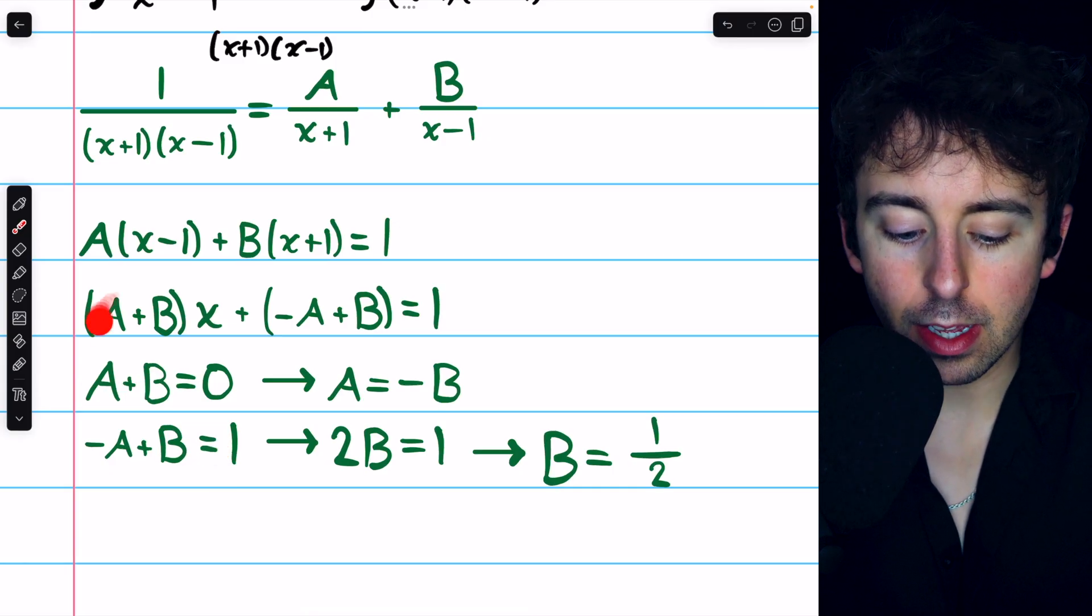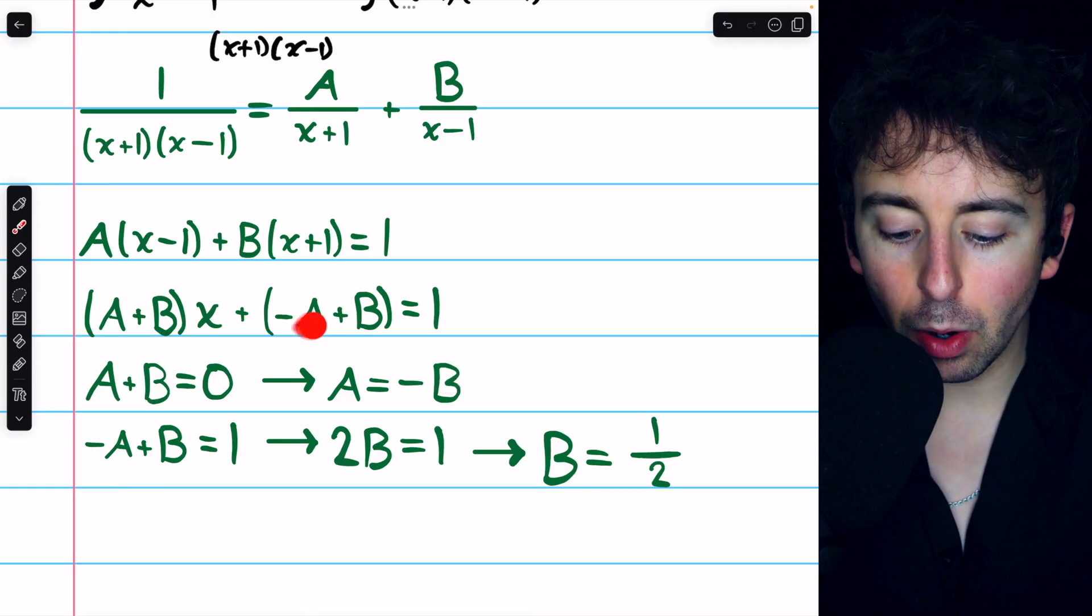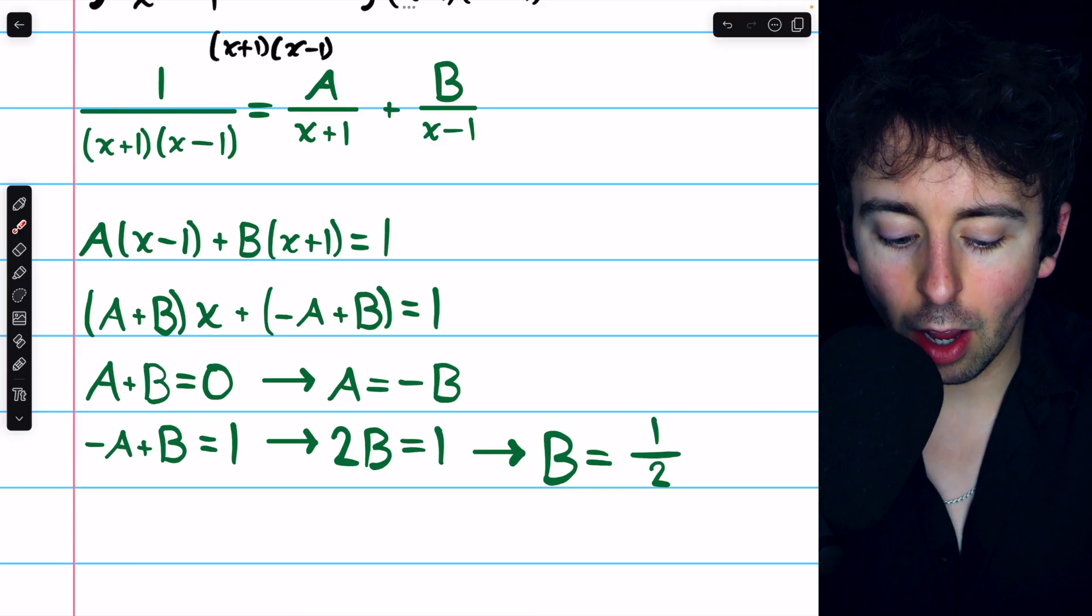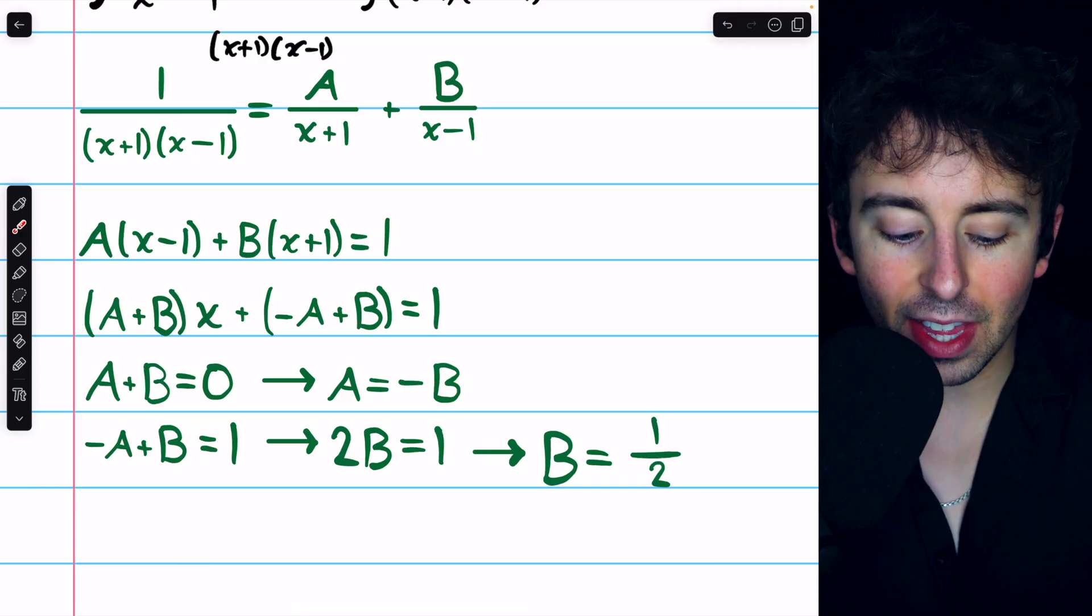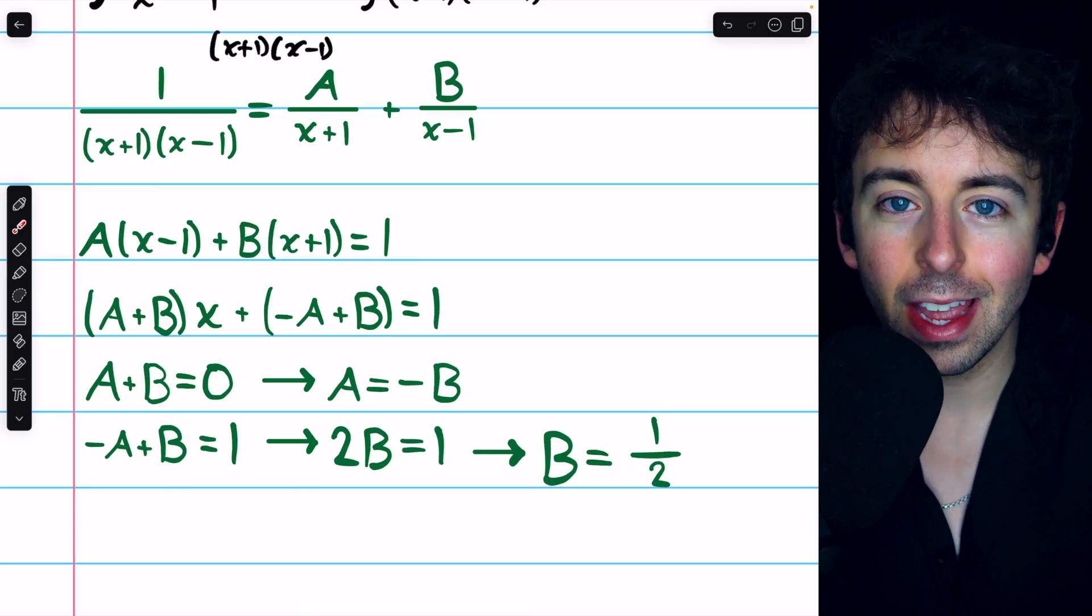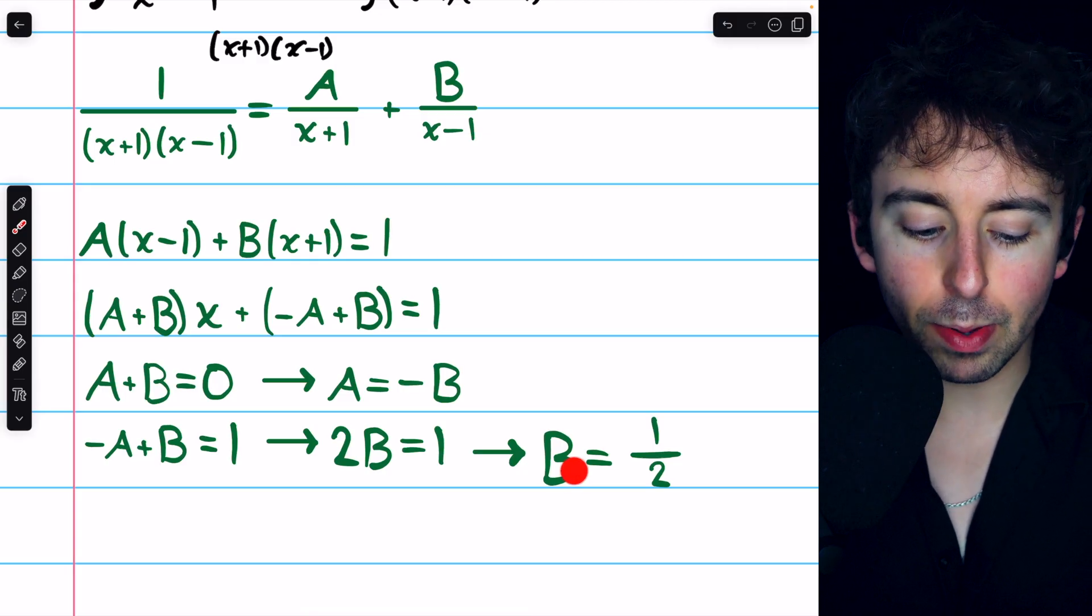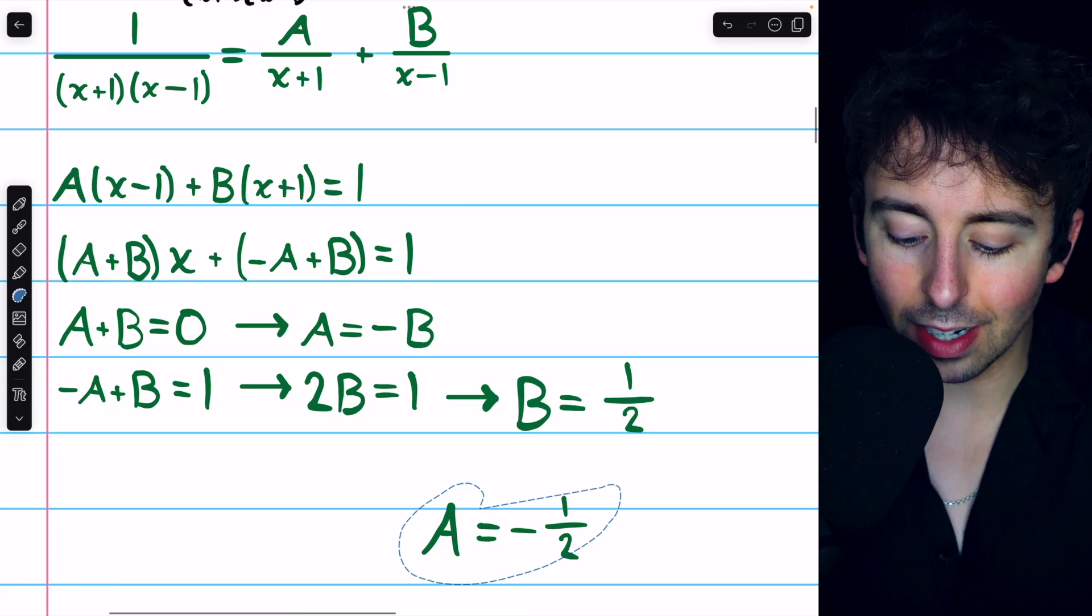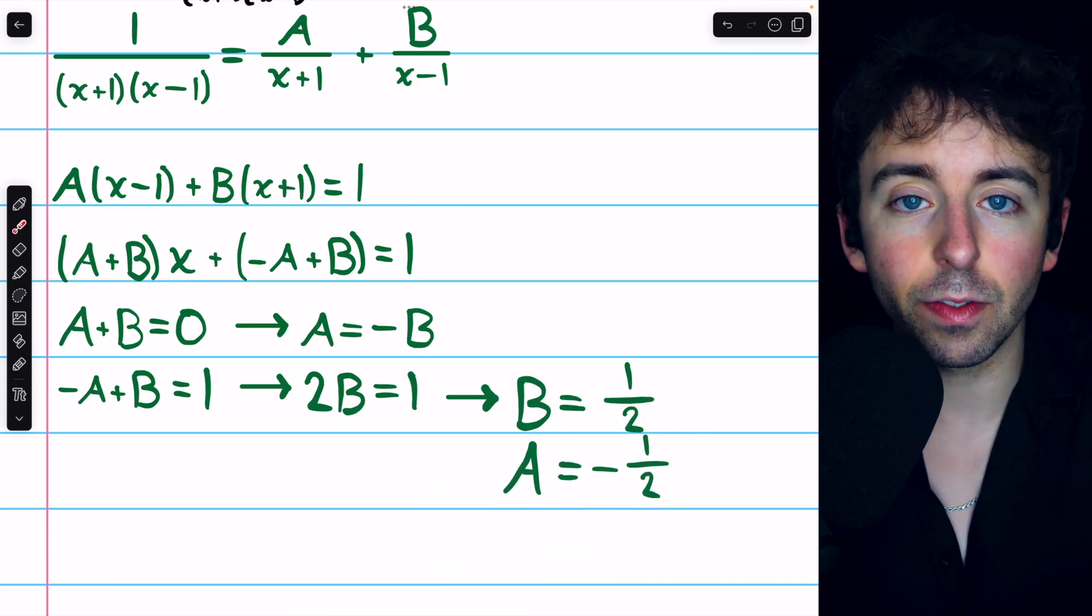A plus B must equal zero, and so A must equal negative B. But we also have that negative A plus B must equal one. Replacing A with negative B, we have that negative negative B plus B equals one, which means that 2B equals one. So B is equal to one half. Since A equals negative B, we have that A equals negative one half.